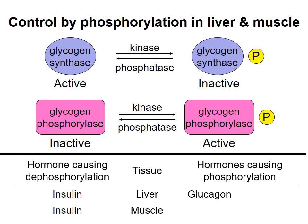The liver can then release glucose into the bloodstream to maintain blood glucose levels. However, glucagon does not cause phosphorylation of these enzymes in skeletal muscle, because muscle stores glycogen for its own use only. Therefore, it doesn't matter to muscle cells if the blood glucose concentration is low — muscle will not break down glycogen for that reason. The hormone epinephrine, also called adrenaline, causes phosphorylation of these enzymes in both liver and skeletal muscle. Epinephrine is released under stress conditions, and so the liver breaks down glycogen in anticipation of an increase in the energy need of the body, and skeletal muscle breaks down glycogen in anticipation of increased activity of that muscle.